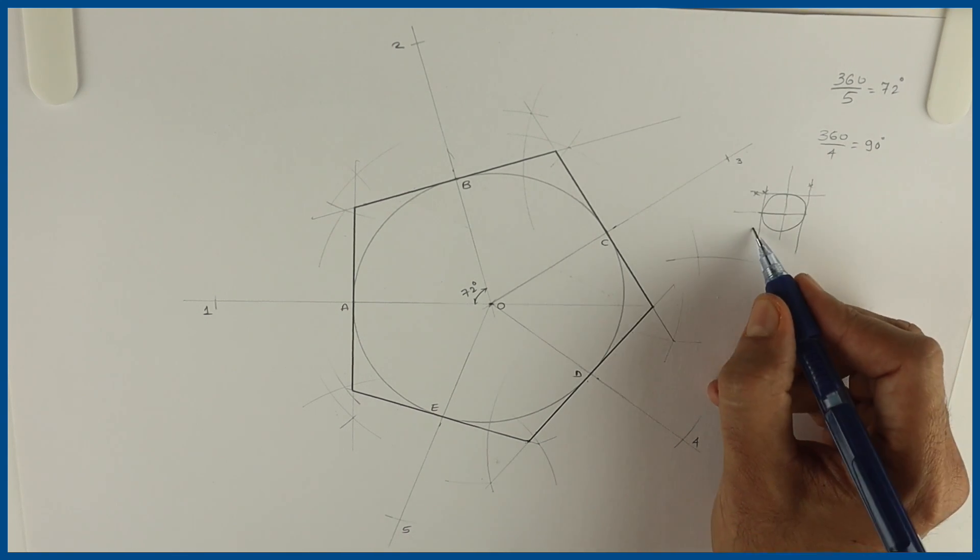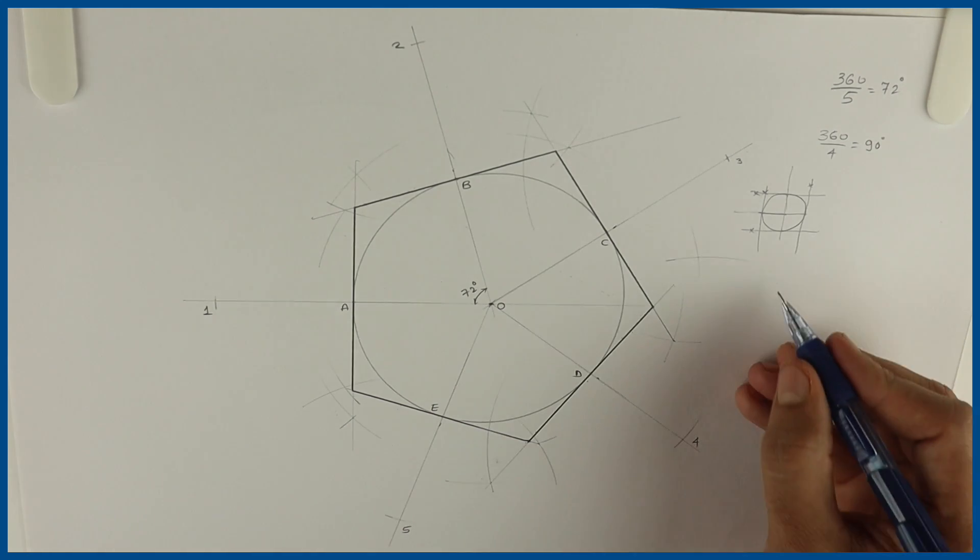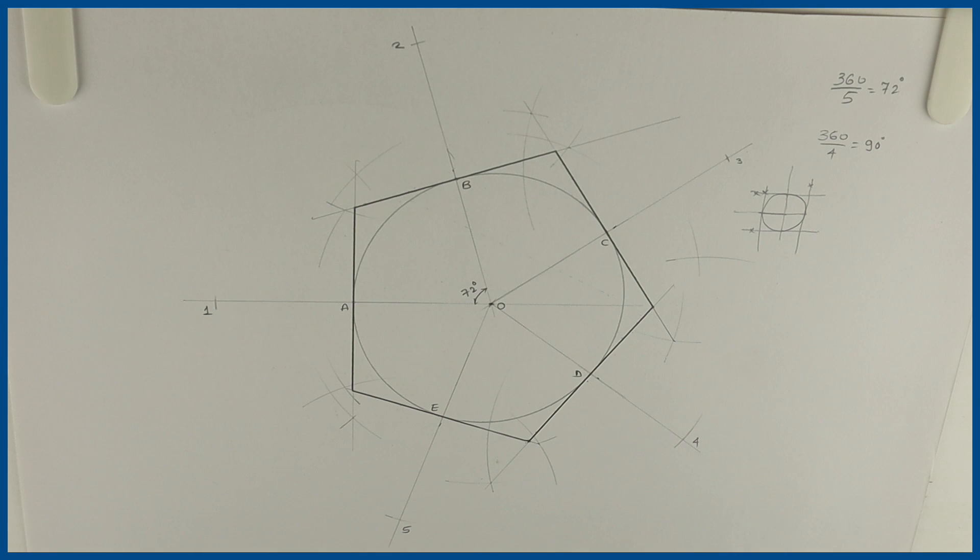If you want to draw hexagon around a circle. Same method. 360 divided by 6. Triangle. Same way. 360 divided by 3. And follow the same method.